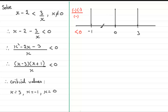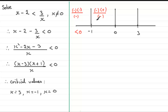Now take a value between minus 1 and 0, say minus one half. Minus one half minus 3 is minus three and a half — a negative value. Minus one half plus 1 is positive. We're dividing by minus one half, a negative value. So we have negative times positive on the top, giving negative, divided by negative — that's positive, a value greater than zero.